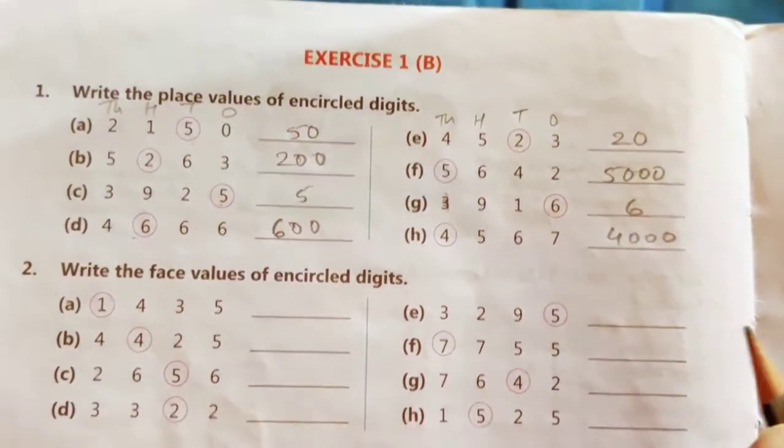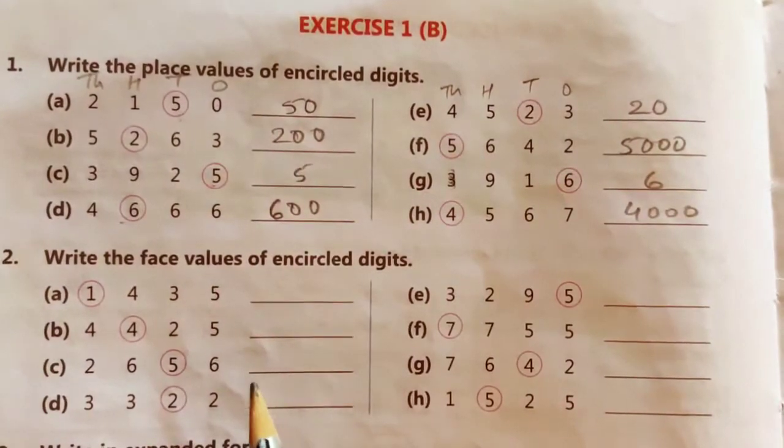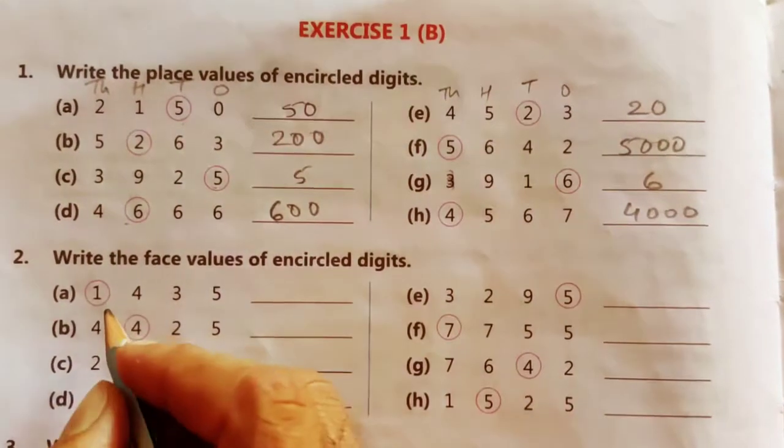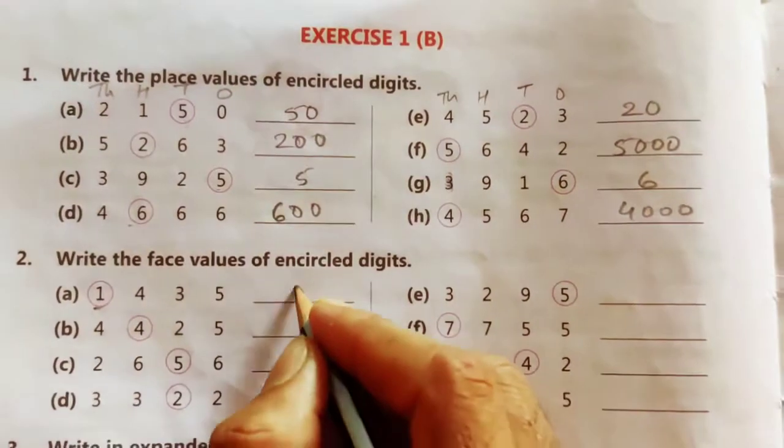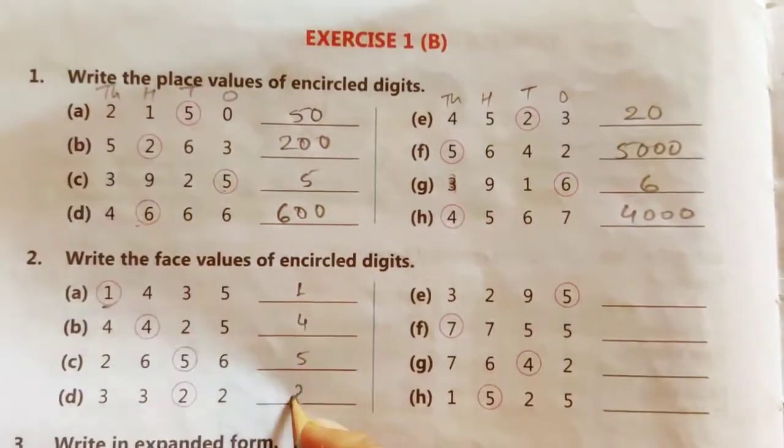Now the second question, write the face value of encircled digit. Now what is face value? The number itself. It means 1 means 1, 4 means 4, 5 means 5, 2 means 2.